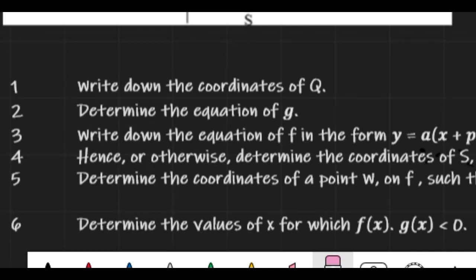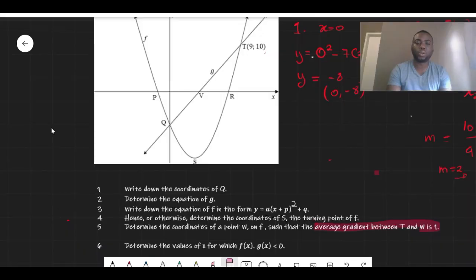So with six, it says determine the value for x for which f(x)·g(x) < 0. Now to be able to answer this question, one thing you need to put at the back of your mind is the concept that anything less than zero is negative and anything greater than zero is positive.